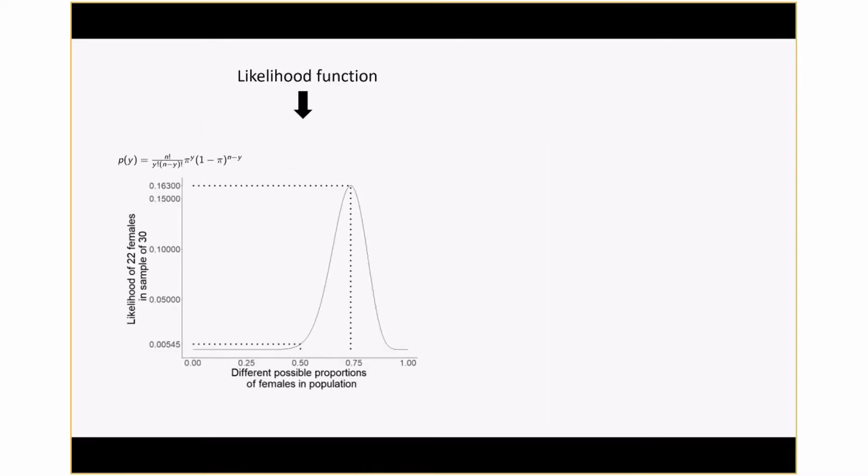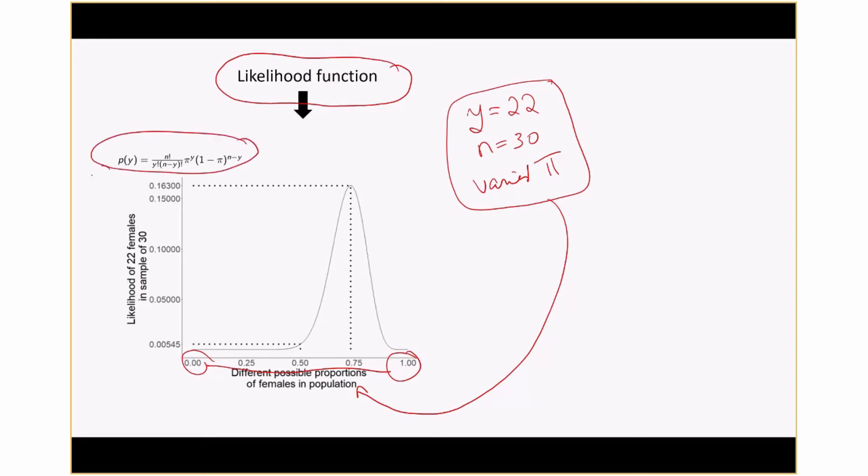Here's our likelihood function. Remember how that operated: we kept Y constant at 22, we knew that N was 30, and then we varied pi. It goes on the x-axis, everything between 0 and 1. With these values of 22, 30, and pi, we calculated probability of Y, which went on the y-axis.